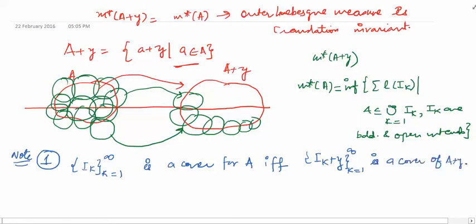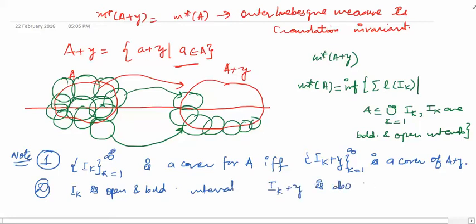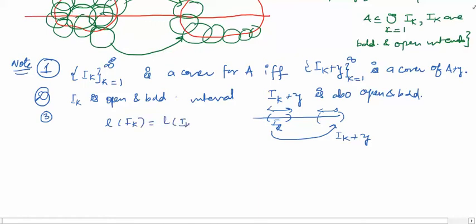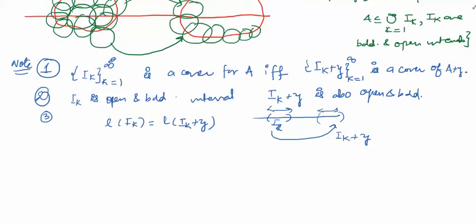The second thing to note is that if I_k is an open and bounded interval, then I_k + y is also open and bounded. The third thing to note is: if I translate the interval I_k by y to get I_k + y, the length remains unchanged, so l(I_k) = l(I_k + y).